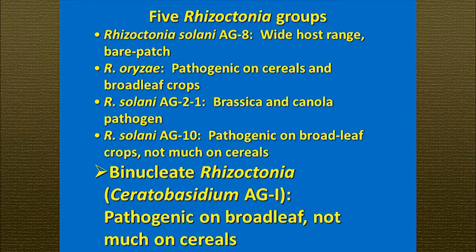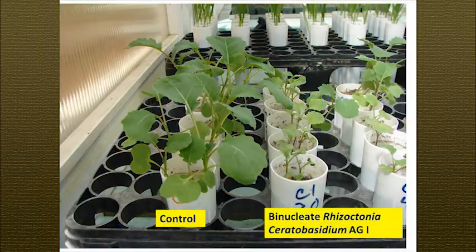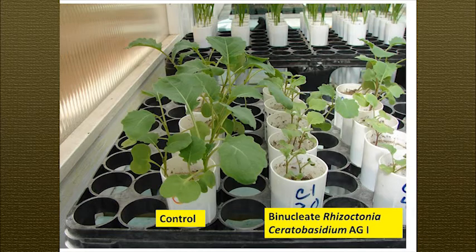Another group I want to mention is a little less common: the binucleate Rhizoctonias, also referred to as Ceratobacidium. These can also cause fairly substantial stunting. In a greenhouse assay comparing a control on the left versus plants inoculated with different Ceratobacidium isolates on the right, you can see a lot of stunting. If you look closely, there's also some purpling and discoloration of the stems, which is an indication that these plants are experiencing some nutrient stress or deficiencies.